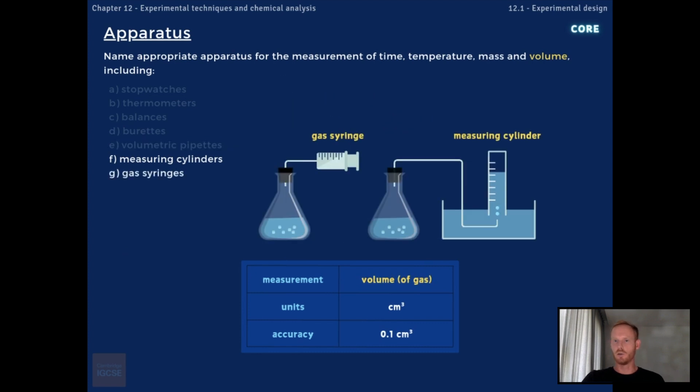The volume of a gas can be measured using a gas syringe or by downward displacement of water using a measuring cylinder. Both are generally accurate to 0.1 cubic centimetre, but gas syringes give much more precise readings.